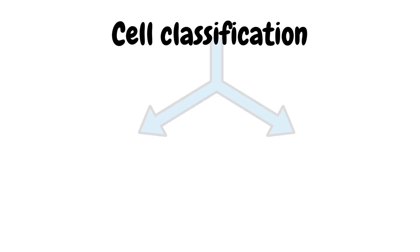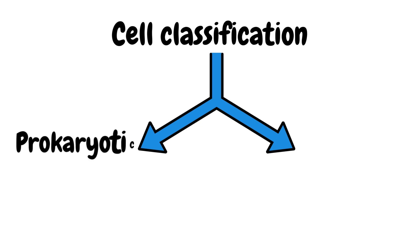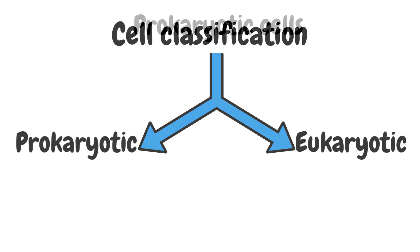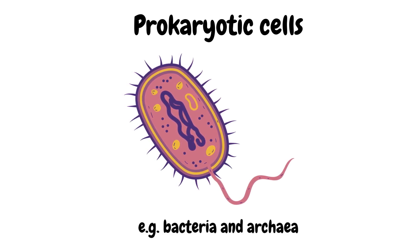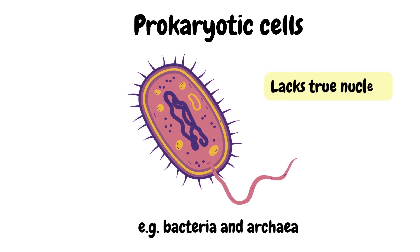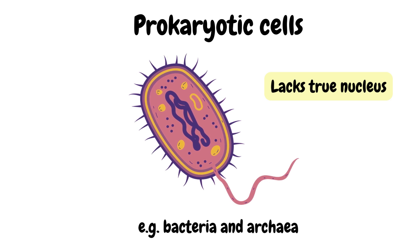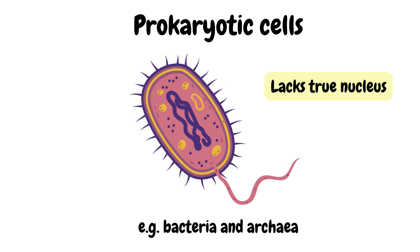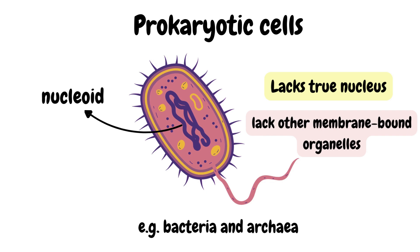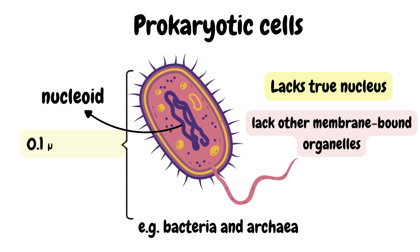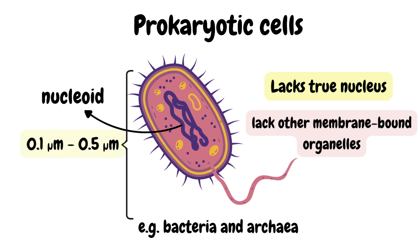Let's go to cell classification. All cells can be broadly classified into two fundamental types: prokaryotic and eukaryotic cells. Prokaryotic cells have a simpler structure and are characteristic of single-cell organisms like bacteria and archaea. Their main distinguishing feature is the absence of a true nucleus. Their genetic material, which can be DNA or RNA, is located in a region of the cytoplasm called the nucleoid.